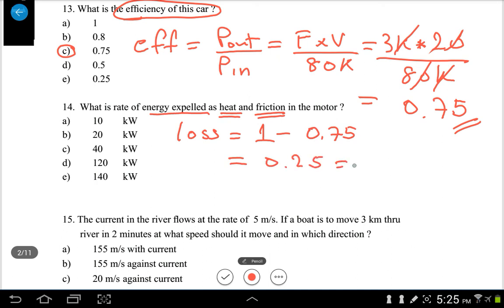One quarter of the input. Since we know the input is 80 kilowatts, multiply this with 1 over 4, you will get the rate of energy lost. In this case we're getting 20 kilowatts, so the answer will be B.